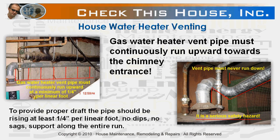Gas water heater vent pipe must continuously run upward towards the chimney entrance. To provide proper draft, it should be rising at least a quarter of an inch per linear foot. No dips, no sags — proper support is required along its entire run. Some installations might be a significant challenge or even become impossible due to water heater height, location, and chimney flue connection level. In such cases, consider using an induced draft motor equipped water heater.